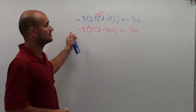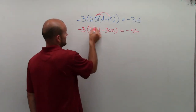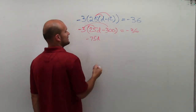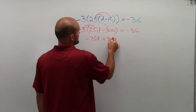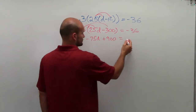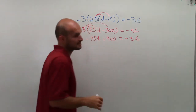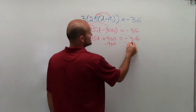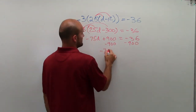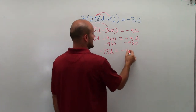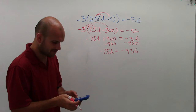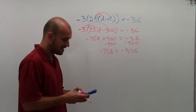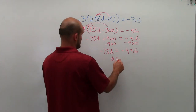Then what I could do is apply distributive property again. So I could do negative 3 times 25, which would be a negative 75d. Negative 3 times 300, which would be a positive 900, equals a negative 36. Then I'm at a two-step equation. So now I could just solve — subtract 900 from both sides, giving negative 75d equals a negative 936. Then I'd take my calculator and say negative 936 divided by negative 75, equals positive 12.48.